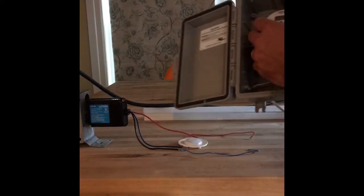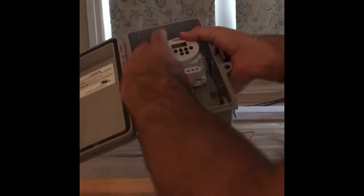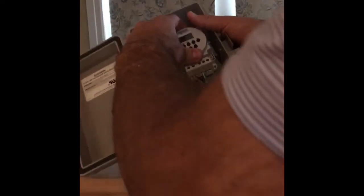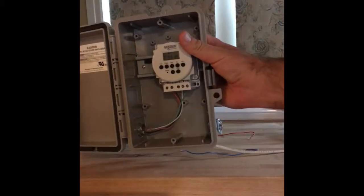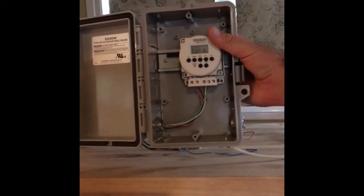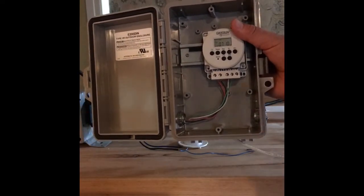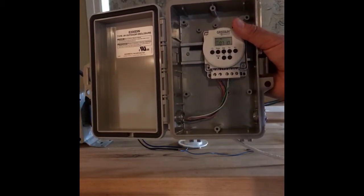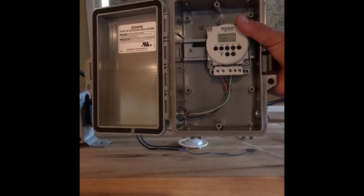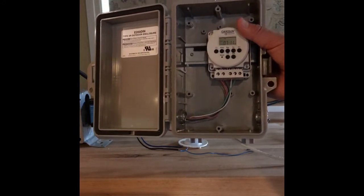It's a DIN rail mount, so I'll show you how it clips right in here. Okay, so now we've got our timer and again we're gonna wire it in parallel so when this timer closes the lights are on and the motion sensor, the other motion sensor, even though it sees motion, will not turn off the lights during the time clock period.